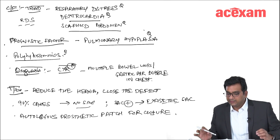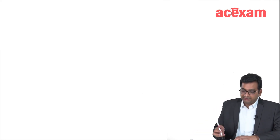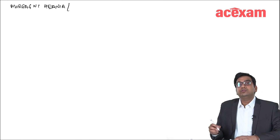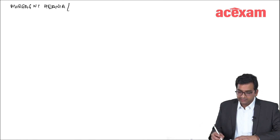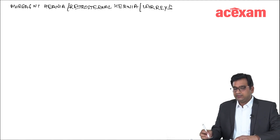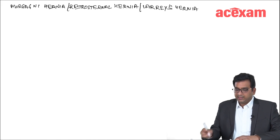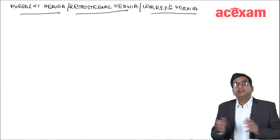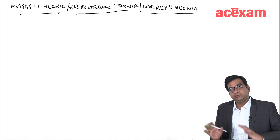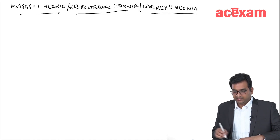There is another topic related to congenital diaphragmatic hernia, which is Morgagni hernia. This Morgagni hernia is also known as retrosternal hernia or Larry's hernia. I suggest you always try to remember two or three names of a single disease, because majority of questions are related to the names itself.